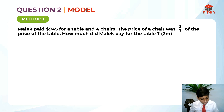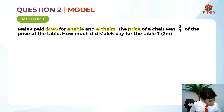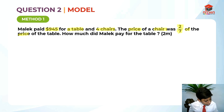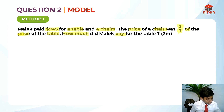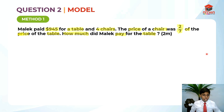Let's highlight the key information. Malik paid $945 for a table and 4 chairs. The price of a chair was 2 sevenths of the price of the table. How much did Malik pay for the table? These are the key information. Since we have highlighted the key information, we can move on to solving the question. First step, we need to draw the model.